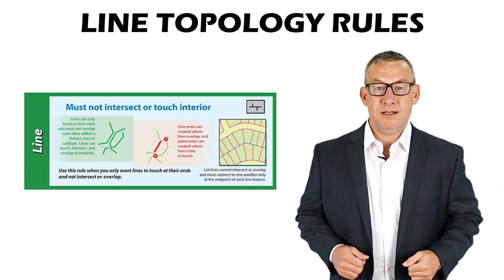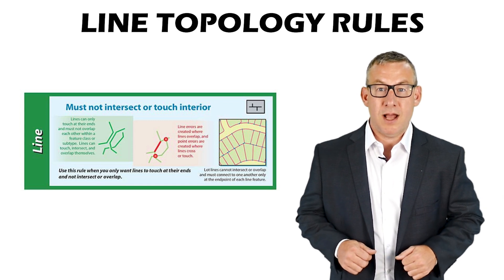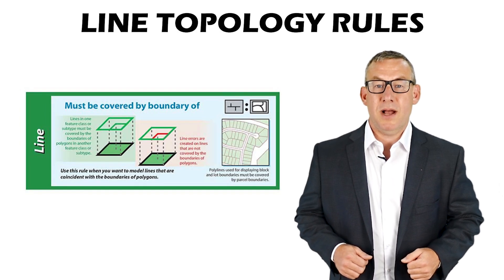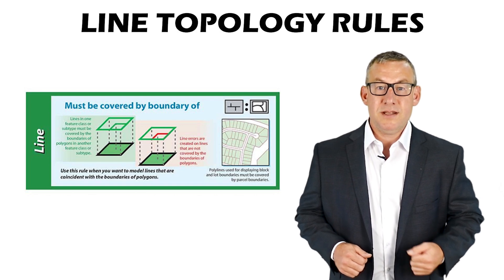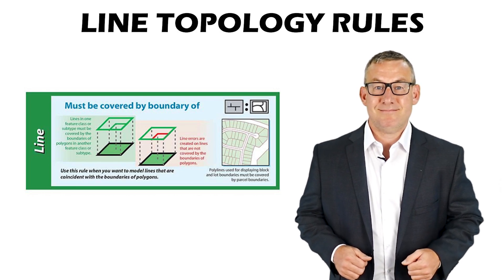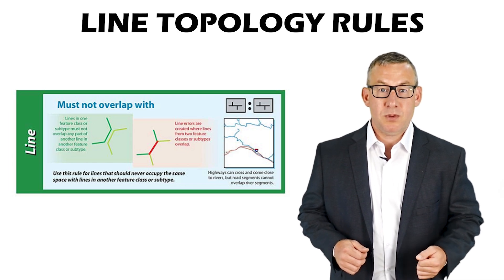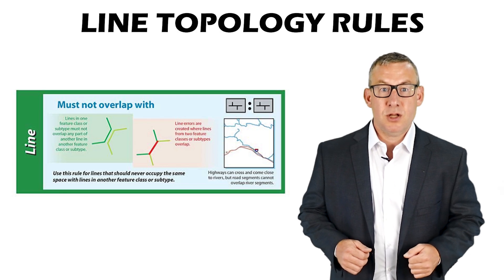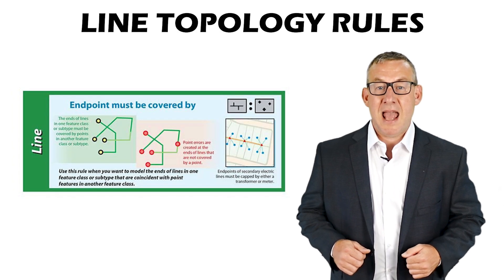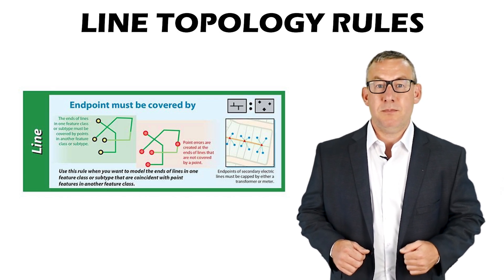Must Not Intersect Or Touch Interior With — lines can only touch at their ends and must not overlap lines in another feature class. Must Be Covered By Boundary Of — lines must be covered by lines in another feature class. Must Not Overlap With — lines cannot overlap or have common connecting vertices to any part of a line in another feature class. End Point Must Be Covered By — the end points of lines must be covered by points in another feature class.